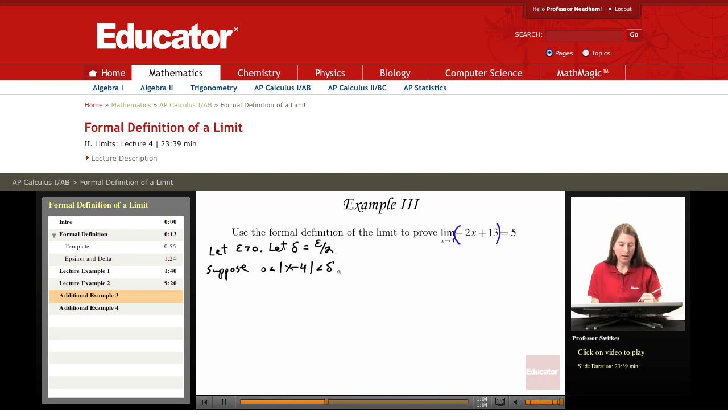This is looking at absolute value of x minus a, then the absolute value of the function f of x minus the limit result. Now, we work with this and hope to conclude that this absolute value is less than epsilon.